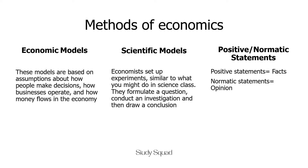The last method of economics is positive and normative statements. When we talk about positive and normative statements in economics, we're distinguishing between two ways of thinking. Positive statements are all about facts and evidence — they describe how things are, without any judgment or opinion, and can be tested and proven right or wrong. For example: unemployment in the country is currently at 5%. Normative statements express opinions and judgments about what is good or bad, better or worse, and can't be proven true or false because they are based on values and beliefs. For example: the government should reduce unemployment to below 4% to improve the economy.